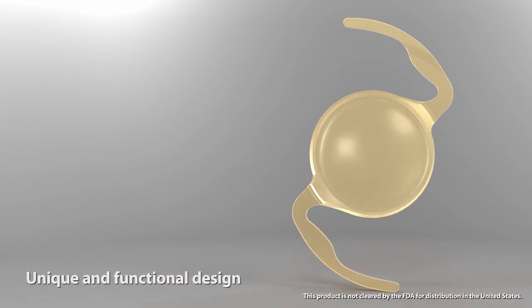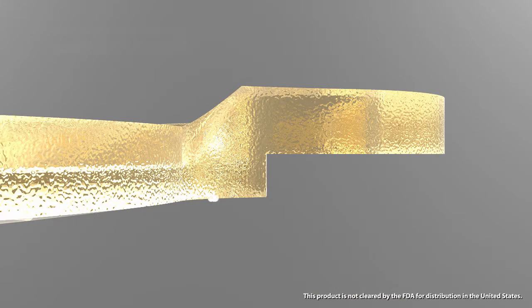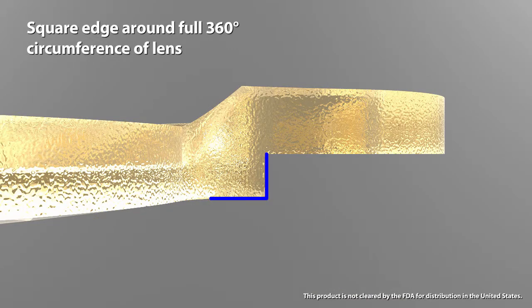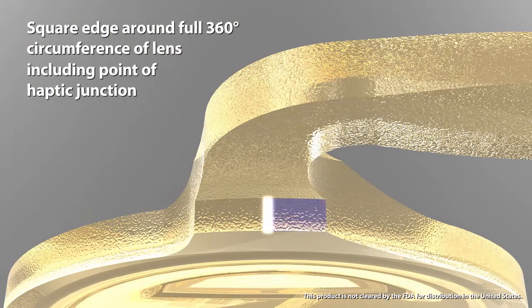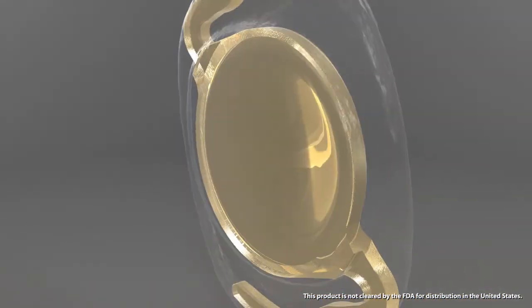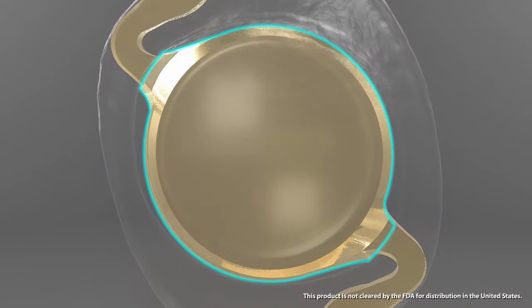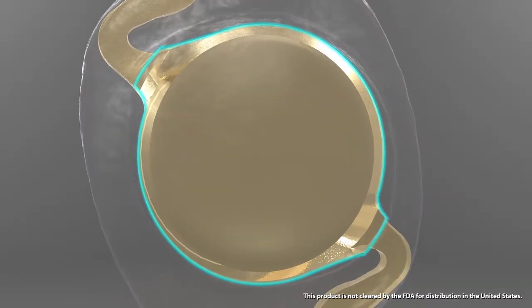The Actis SP has a unique and functional design. It features a square edge around the full 360-degree circumference of the lens, including the point of haptic junction with a small gap. This enhances bonding of the IOL surface to the posterior capsule, minimizing the risk of posterior capsule opacification.